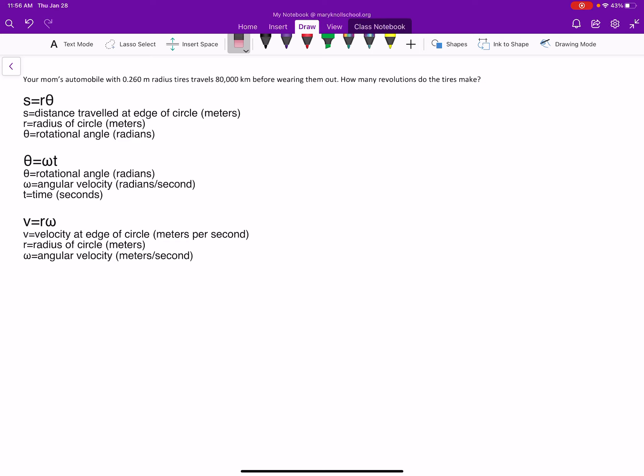Your mom's automobile with 0.26 meter radius tires travels 80,000 kilometers before wearing them out. How many revolutions do the tires make? So let's go ahead and figure out what we have. We have R. And we also have distance S before wearing them out. And then what do we want to solve for? How many revolutions? So it looks like we want to know how much angle they went through, or we want to know theta. So the problem that we have will be answered by S equals R theta. Let's go ahead and find those values.